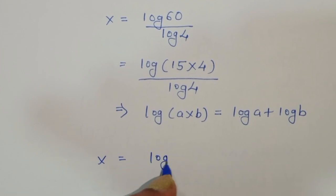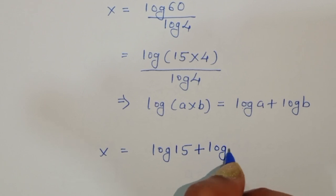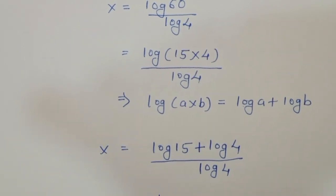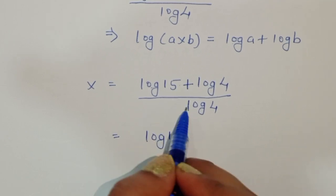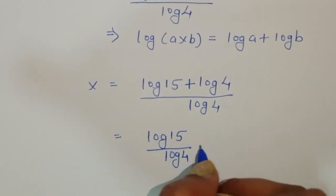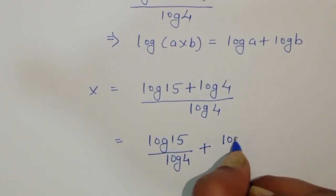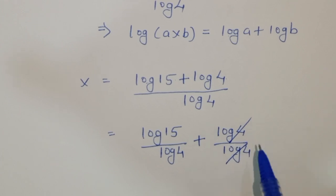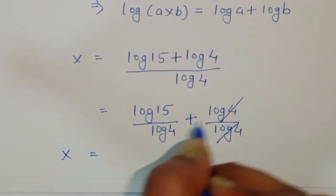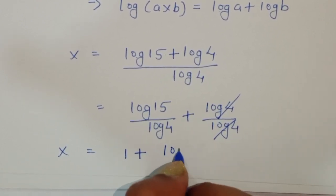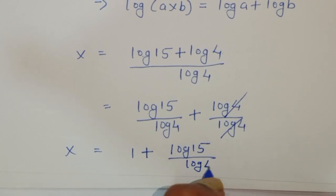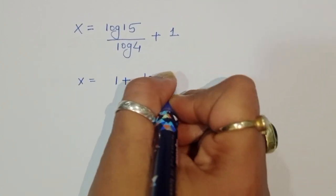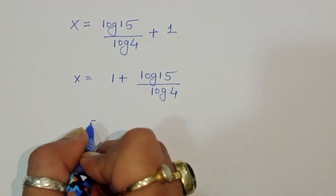So x is equal to log of 15 plus log of 4 divided by log of 4. Separating the terms: log of 15 divided by log of 4, plus log of 4 divided by log of 4. The second term cancels to 1, so x equals 1 plus log of 15 divided by log of 4.